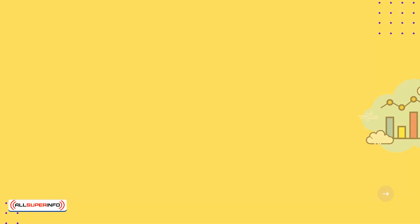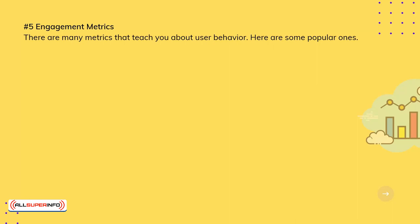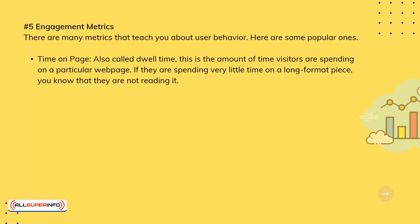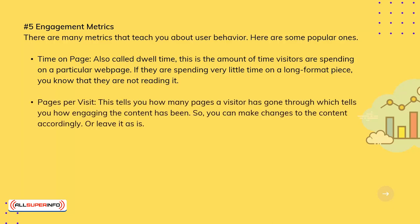5. Engagement Metrics. There are many metrics that teach you about user behavior. Here are some popular ones. Time on Page, also called Dwell Time: this is the amount of time visitors are spending on a particular page. If they are spending very little time on a long format piece, you know that they are not reading it. Pages Per Visit: this tells you how many pages a visitor has gone through, which tells you how engaging the content has been, so you can make changes to the content accordingly, or leave it as is.